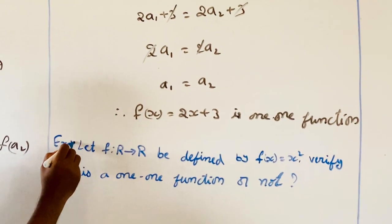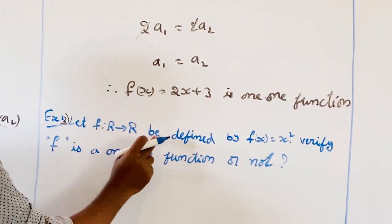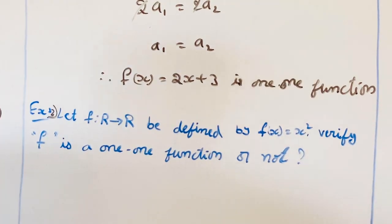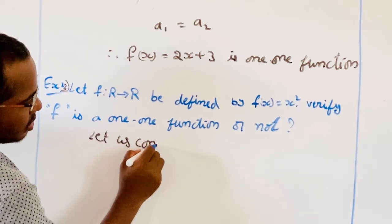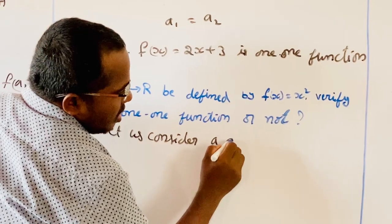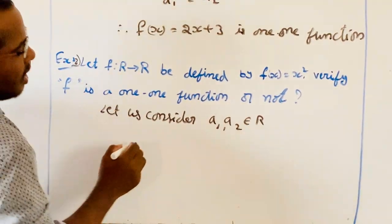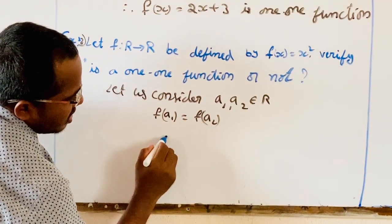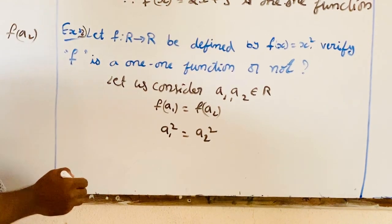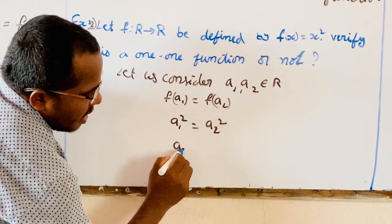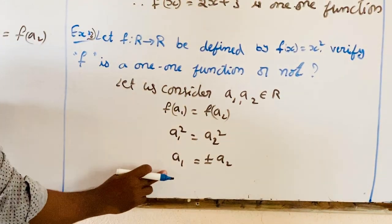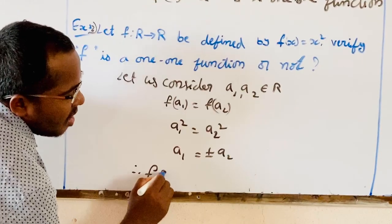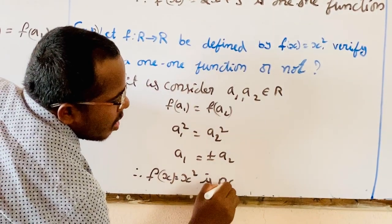Second example: let F(x) = x². Verify whether F is a one-one function or not. Let A1, A2 belong to R and suppose F(A1) = F(A2), so A1² = A2². This gives A1 = ±A2, meaning A1 = A2 or A1 = −A2. Therefore, F(x) = x² is not a one-one function.